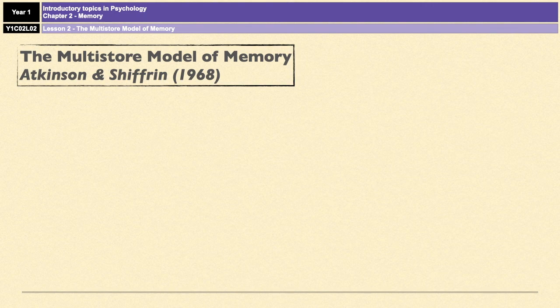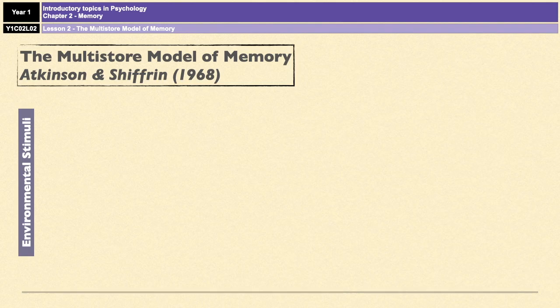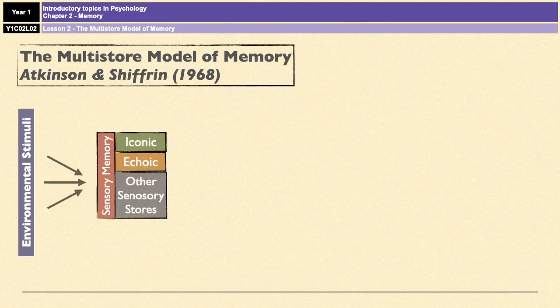The multi-store model of memory suggests that everything starts with environmental stimuli — things that come in through our senses from the environment — and those things go directly into the first store in the multi-store model, which is sensory memory. You have iconic memory, which is for visual elements; echoic memory, which is for auditory elements; and then another generic store for other sensory information.